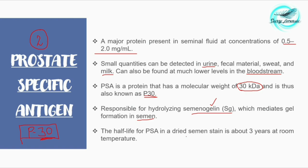The half-life of PSA in dried semen stains is about 3 years at room temperature, compared to 6 months for acid phosphatase. In wet conditions, the sample will degrade due to contamination by microorganisms, making it unfit for PSA identification. The best evidence therefore comes from dried seminal stains.